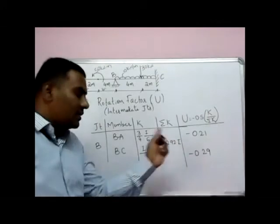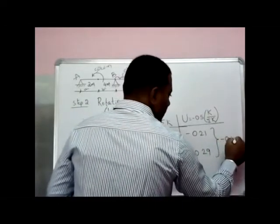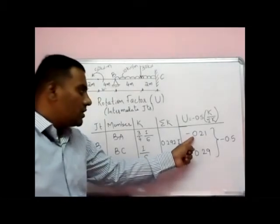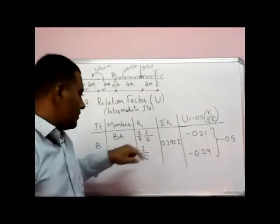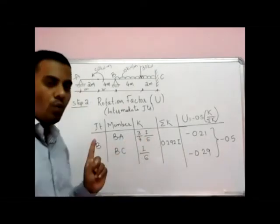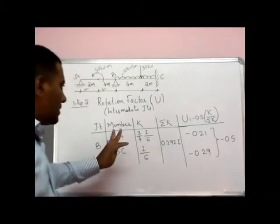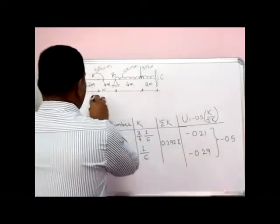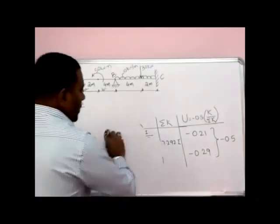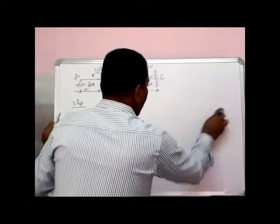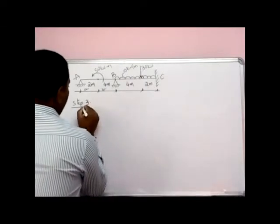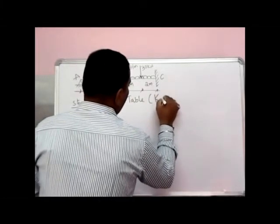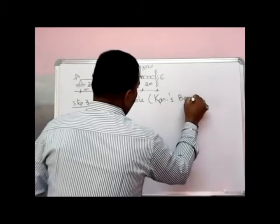As a cross-check, the summation of rotation factors at a joint should equal minus 0.5: minus 0.21 plus minus 0.29 = minus 0.5. Correct. Step two is complete. Step three is to find rotation moments by the iterative table — that is, by Kani's boxes.